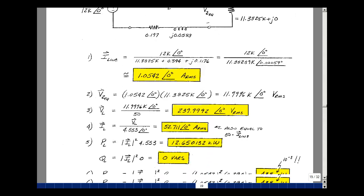The current in the load then would be that voltage divided by the impedance of 4.553 at angle zero. And now we've got 52.711 at angle zero amps RMS.